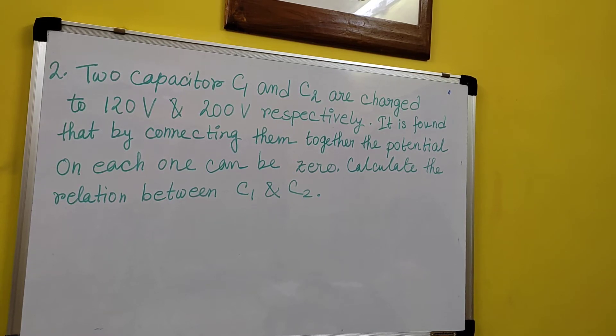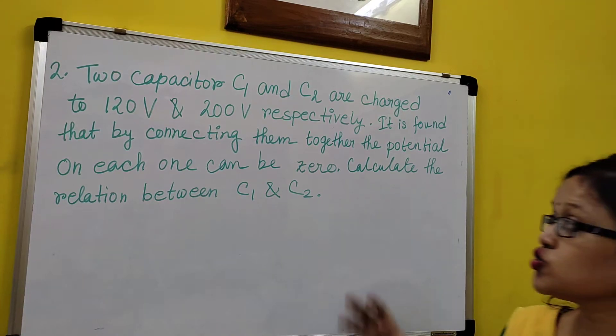So it is possible that the potential on each of them is 0. The common potential due to redistribution of charge is the total charge divided by the total capacitance.